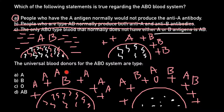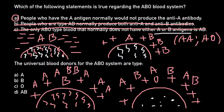Allele A and allele B are codominant, which is why we have blood group AB. Allele O of this surface protein is recessive to both allele A and allele B. That is why the genotypes for blood group A would be AA and AO, the genotypes for blood group B would be BB and BO, and the genotype for blood group O would be OO — since allele O is recessive.